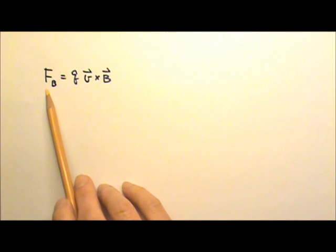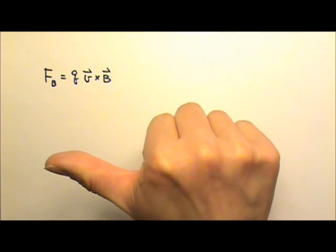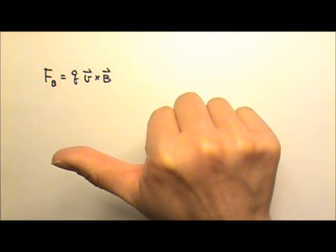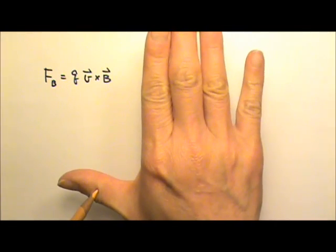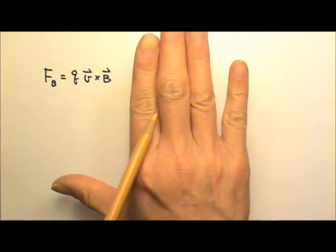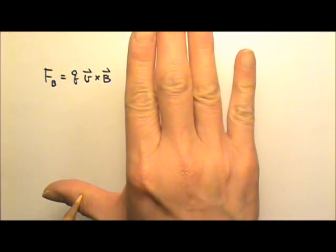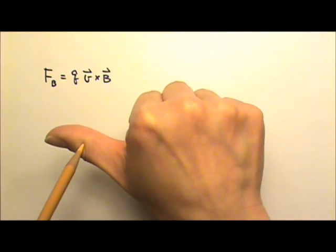The magnetic force acting on a moving charge is Q V cross B. We use the right-hand rule V cross B to find the direction of the force. Because the thumb is the direction of the force, and the thumb is always perpendicular to the straight four fingers, the force is always perpendicular to V and perpendicular to B.